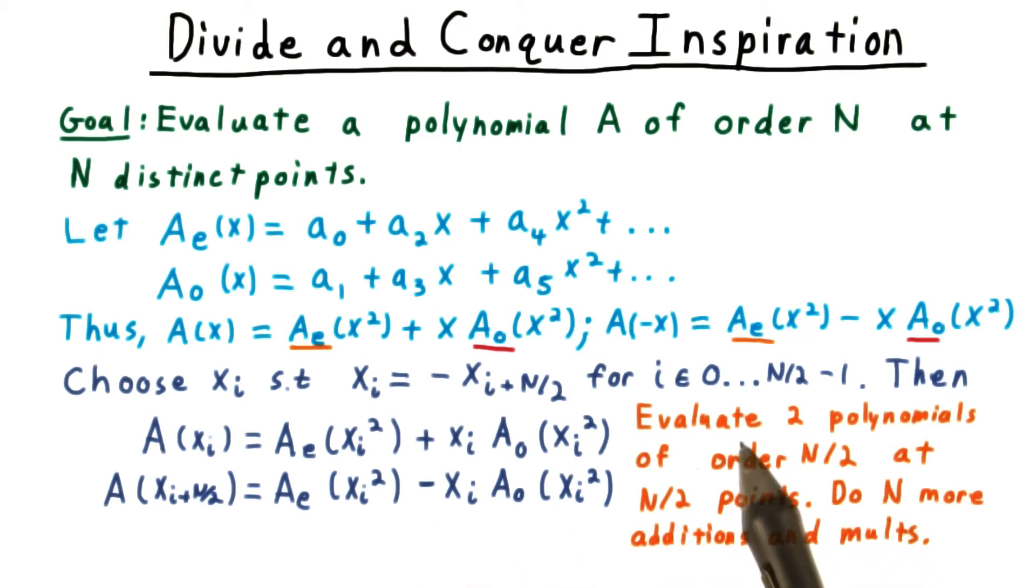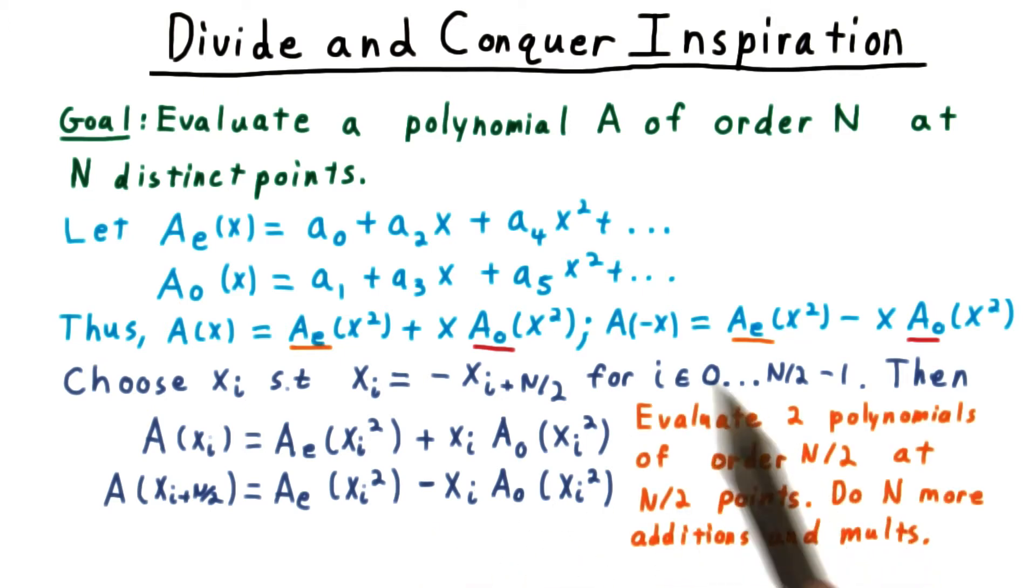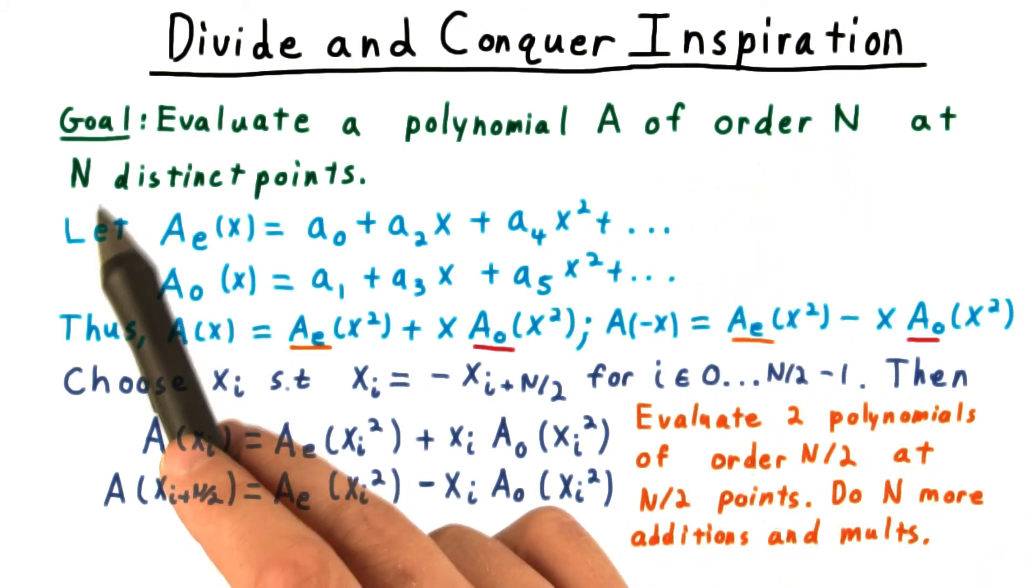Overall, we've changed the problem from evaluating a polynomial of order N at N points to evaluating two polynomials of order N over 2 at N over 2 points, plus doing the work of N more additions and multiplications.